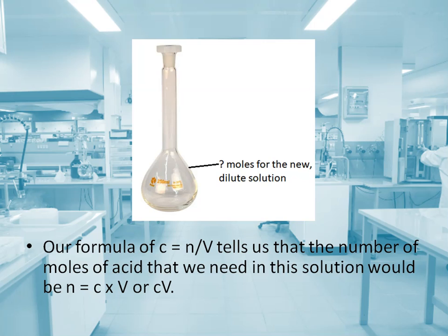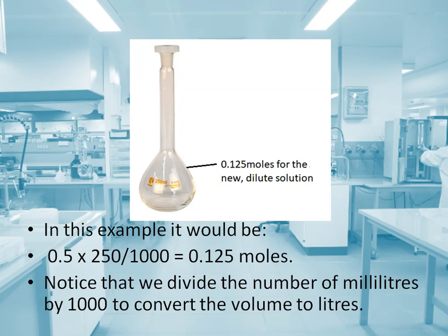The number of moles of acid needed in this solution would be C times V. In this example, that would be 0.5 times 250 divided by 1000 — in other words, 0.125 moles. Notice that we divide the number of milliliters by 1000 to convert the volume to liters.